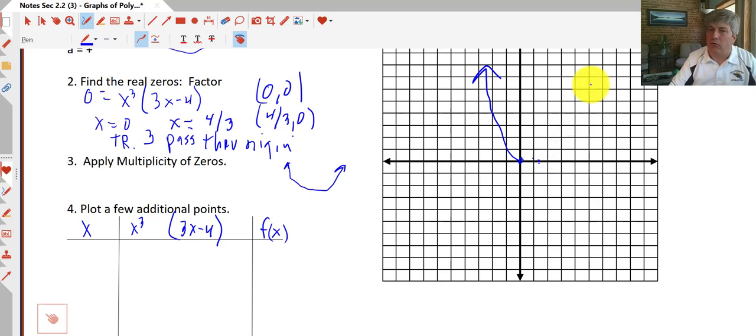So we know our end behavior on this side. So we don't have to check any x's that are greater than 4/3. We also know there's not going to be any points between 0 and 4/3 that are in the positive y's because both of these x-intercepts are passed through because we have an odd number at 0 and an odd number of intercepts at 4/3. So we know our graph has to pass through here. So we know it's going to come down in this direction.